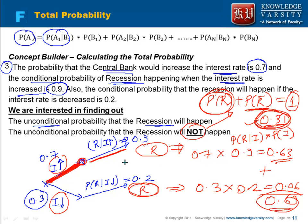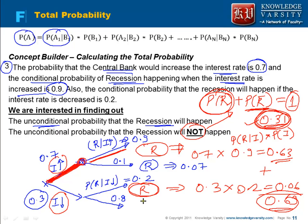Alternatively, you can compute this directly. Since 0.9 and 0.1 are mutually exclusive, 0.7 multiplied by 0.1 gives 0.07 for no recession when interest rate is increased. Then 0.2 and 0.8 are mutually exclusive, so 0.8 multiplied by 0.3 gives 0.24 for no recession when interest rate is decreased. Adding 0.24 plus 0.07 gives 0.31 — the same answer. This is very interesting.